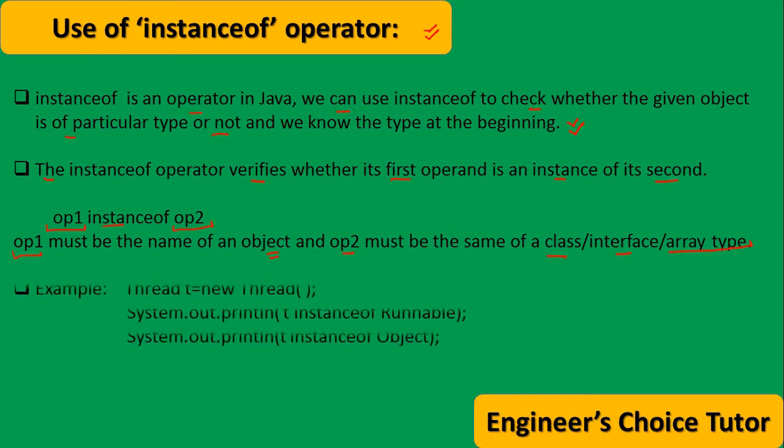And now see the example. Suppose I have created one thread object. Thread t equals new thread. System.out.println(t instanceof Runnable). What it will give? It will give true.